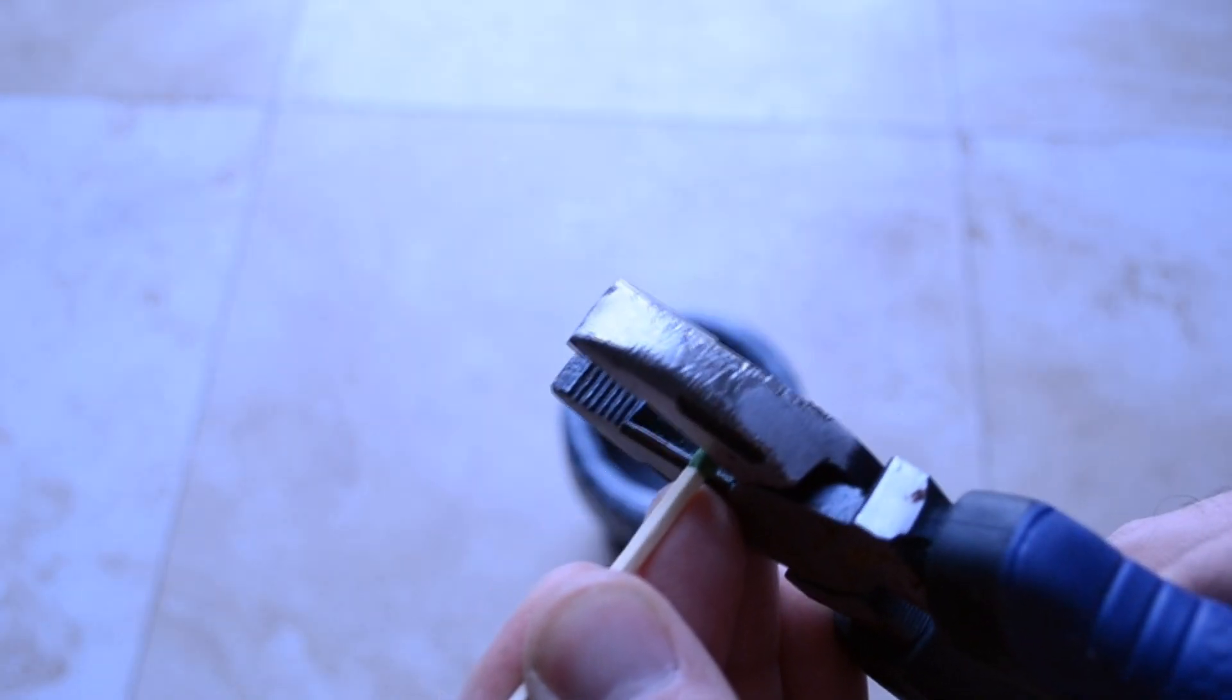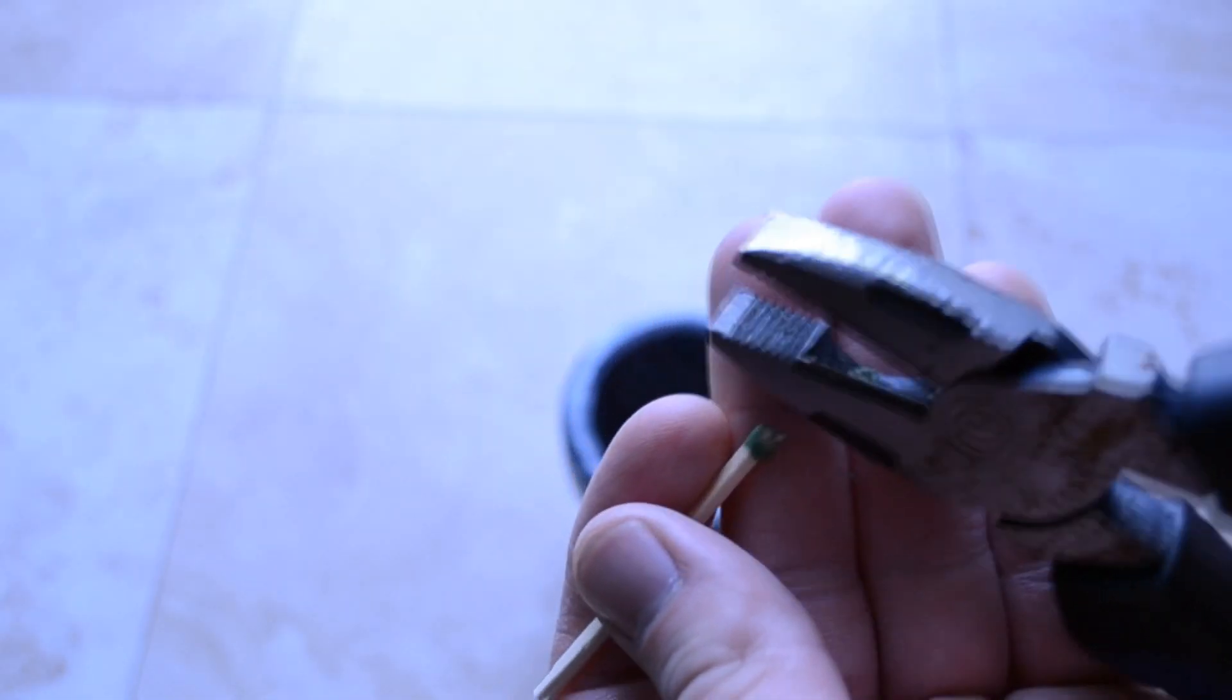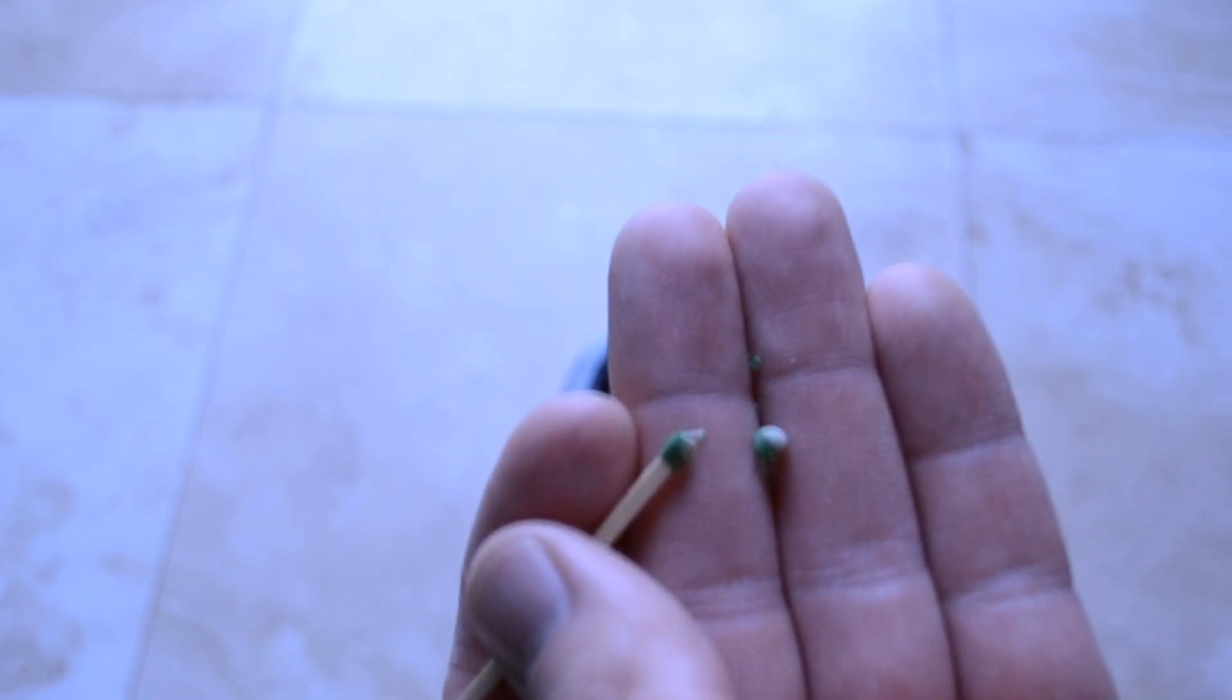Use your wire cutters to cut off the match head, but make sure you don't cut any wood off the match stick, as this will make it more difficult to grind up the match heads. Try to cut off the white tip with a little of the green showing.